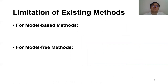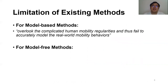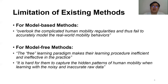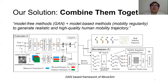Both kinds of methods have limitations. For model-based methods, human mobility is based on complex sequential transitions between locations which can be time-dependent and high-order; model-based methods overlook these complicated regularities and thus fail to accurately model real-world mobility behaviors. For model-free methods, learning without utilizing prior knowledge of human mobility patterns makes the learning procedure inefficient and ineffective. It's also hard for them to capture cadence patterns when learning with noisy and inaccurate raw data. Considering these advantages and disadvantages, we try to combine them to obtain a balanced model with better simulation performance.